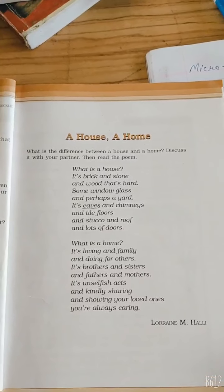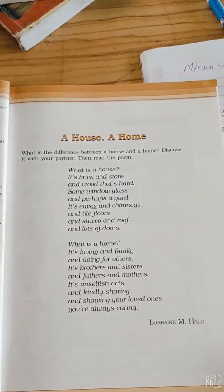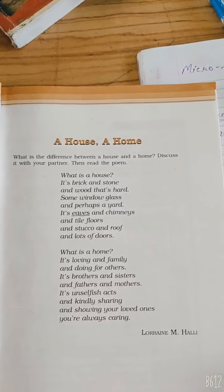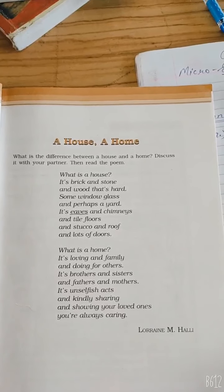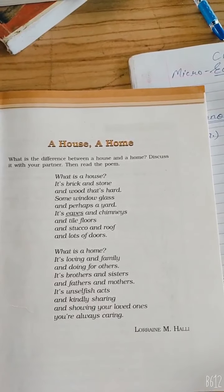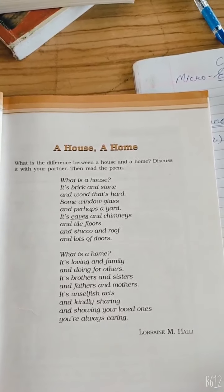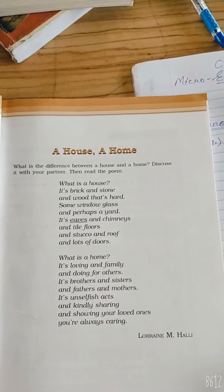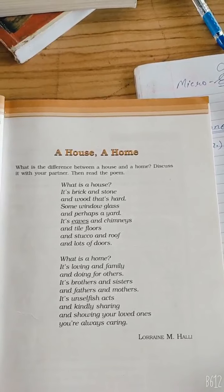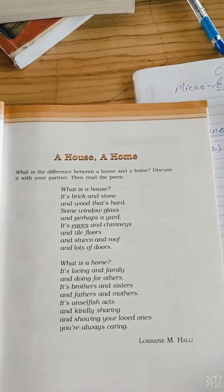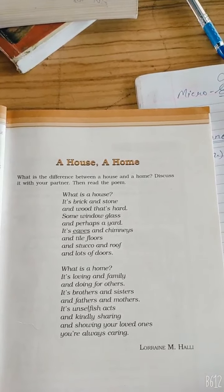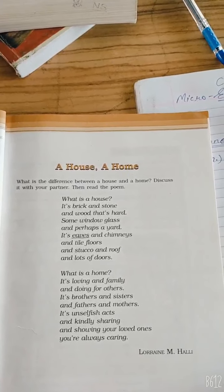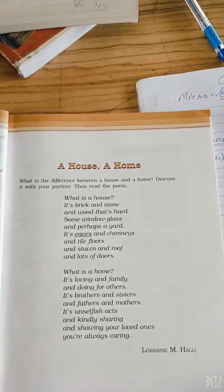Children, 'A House, A Home.' There is a difference between house and home. What is a house? House kya hota hai? Ham is poem mein samjhenge. 'It's brick and stone and wood that's hard, some window glasses and perhaps a yard. It's eaves and chimneys and tiled floors and stucco and roof and lots of doors.'